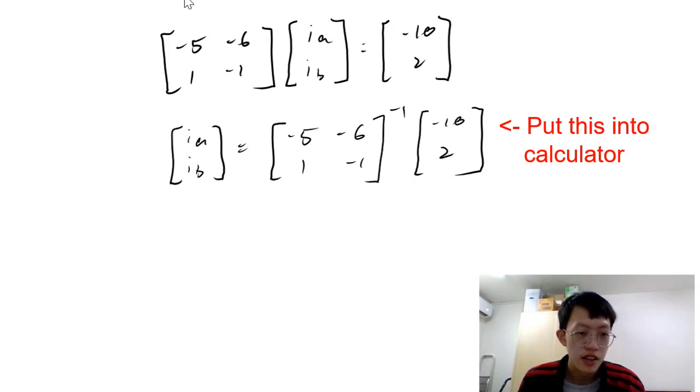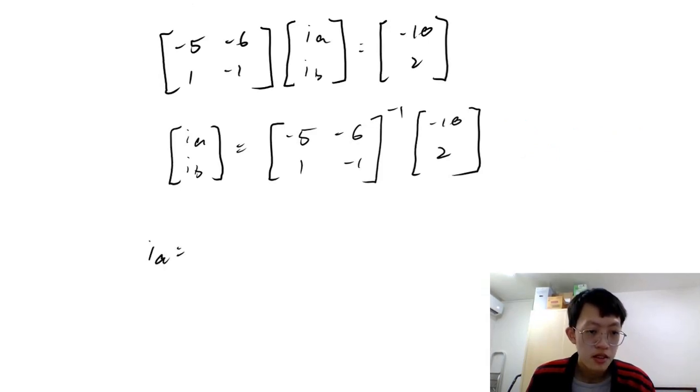So, you should finally arrive at your answers. And I think the answer should be IA being 2 amperes and IB being 0 amperes. Don't worry if it's 0 amperes. It just simply means there's no current passing through this mesh. But really, it's possible.